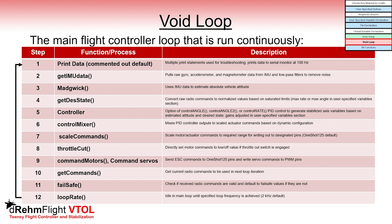Finally, we get to the void loop where the main flight controller code is run continuously. We'll go through this in more detail to cover each of these functions individually, showing what each function does, what variables are created or modified, and the expected values for those variables. At the end of the code where all of the functions are located, each one has a detailed description at the beginning to explain what it does as well.